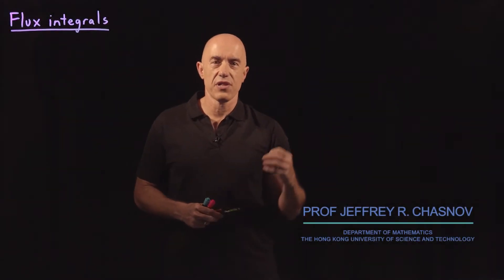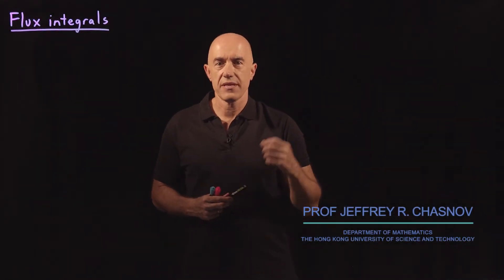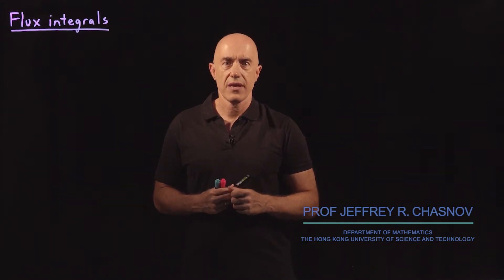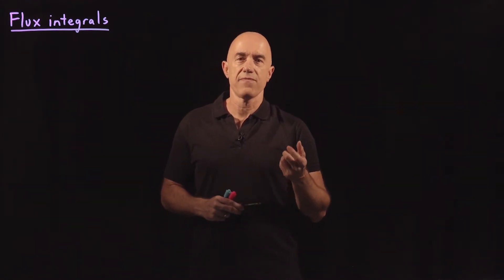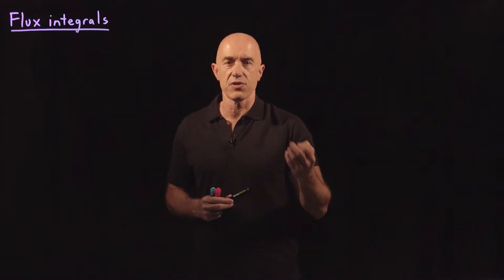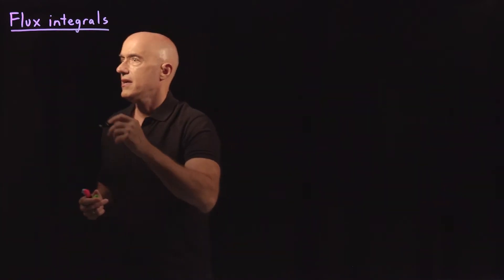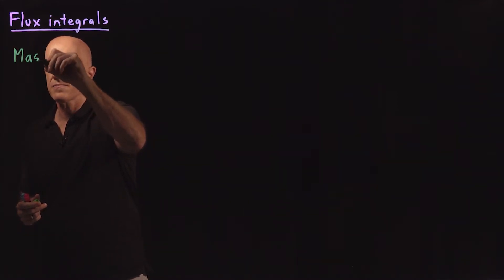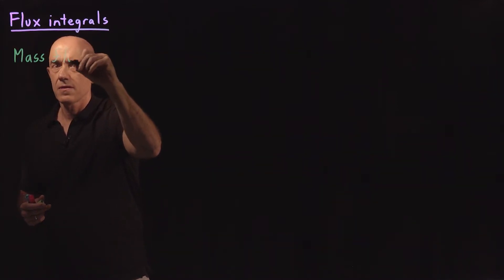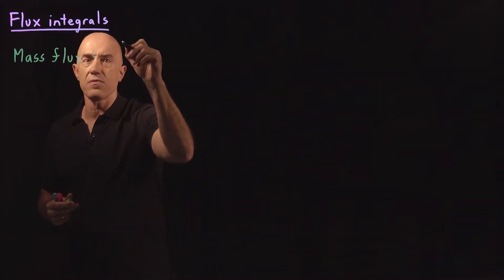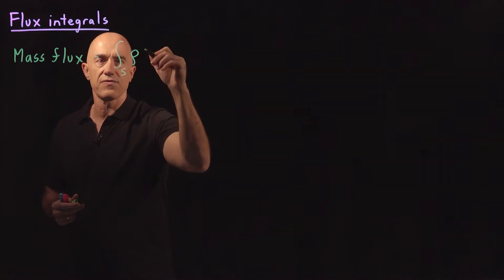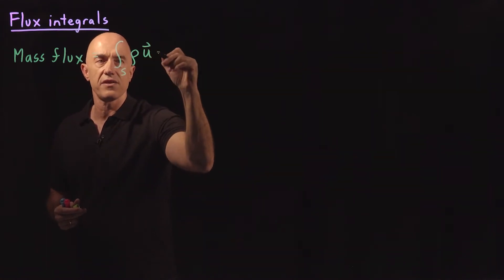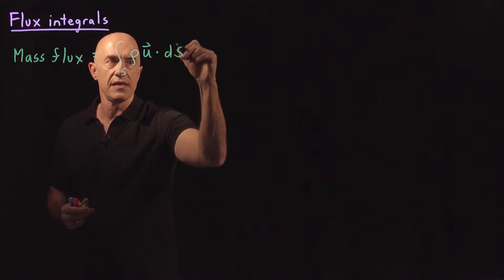The surface integral of a vector field is sometimes called a flux integral, and the flux integral usually has some physical meaning. I think originally it came from fluid mechanics, so let me discuss it first in that context. That's called the mass flux, and it has the formula: the integral over the surface of the density of the fluid times the velocity of the fluid, dotted into dS.